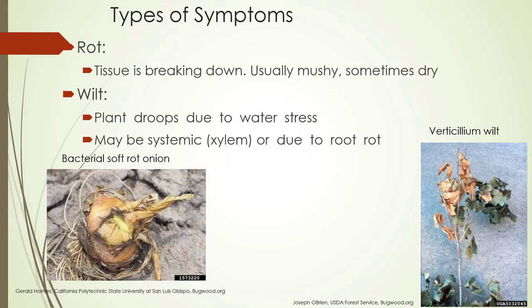Here we have bacterial soft rot on an onion, and there's going to be a very strong smell associated with this as well. Verticillium wilt is a fungal disease, and it's going to show an entire stem or section of a tree beginning to wilt when the rest of it looks fine.